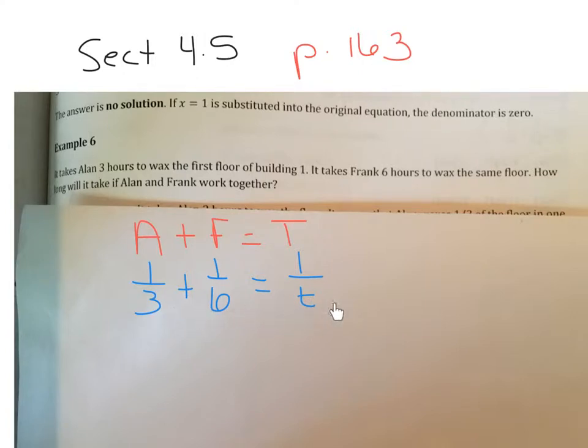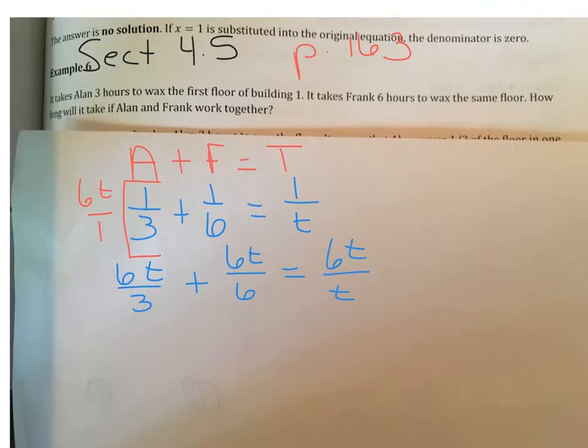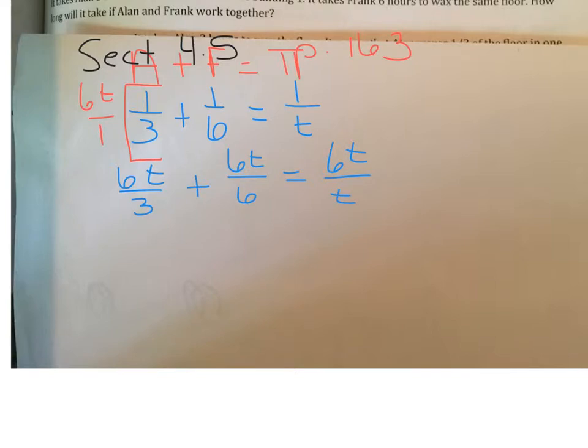So we want the common denominator. The least common multiple for 3 and 6 is 6, but we're going to also need that t on there. So we're going to multiply times 6t. That will give us 6t over 3 plus 6t over 6 equals 6t over t. Now we're going to reduce. This becomes 2t plus 1t equals 6. Now just combine like terms and isolate t. That's going to give you t equals 2.